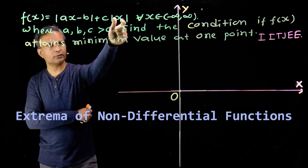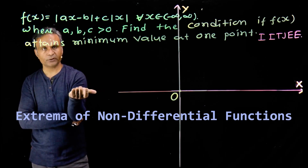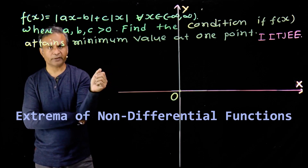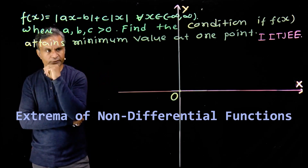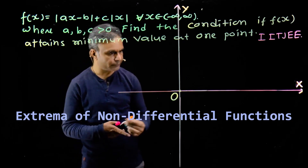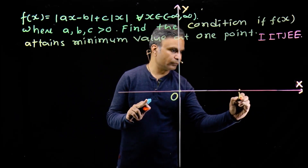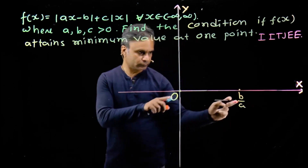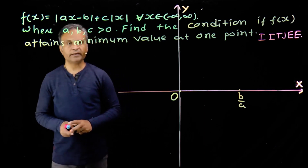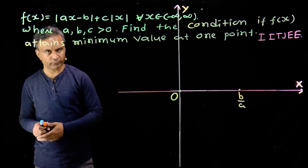Modulus of x is non-differentiable at zero, and this term is non-differentiable at b upon a. So we mark these two points on the coordinate plane — zero and b upon a — as the points of non-differentiability. These two points will also be critical points where the function can have maxima or minima.